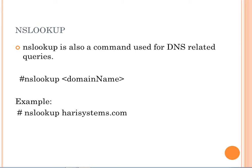For example, to identify NS related queries, you would type: nslookup hurry systems dot com. This will return information about the hurry systems dot com domain, such as related DNS query results. That's all for this session, thank you.